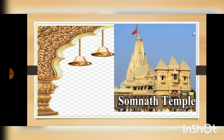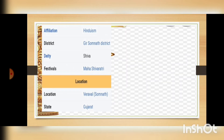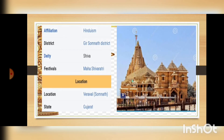The next temple we are seeing on the screen is the Somnath temple. This is a Hindu temple situated in the Gir Somnath district, and the deity worshipped here is Lord Shiva. The festival celebrated in this temple is Mahashivaratri. This temple is located in Veraval Somnath in the state of Gujarat. Here you can see a distant picture of the temple — it is a beautiful temple.